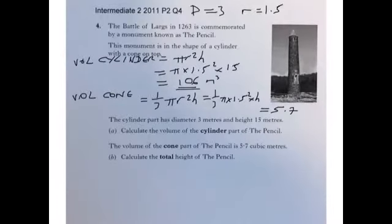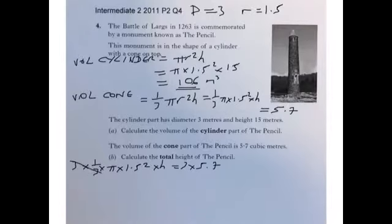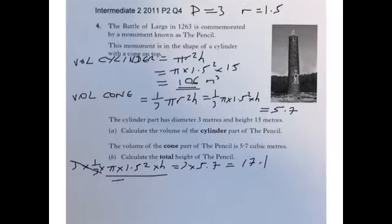What we need to do now is rearrange this equation to find out what the height of the cone is. To get rid of the third, we multiply both sides of the equation by 3. So 3 times one third pi times 1.5 squared times h equals 3 times 5.7. On the left hand side the 3 and the third will cancel. 3 times 5.7 equals 17.1. Now we want to leave h on its own, so we divide both sides by pi times 1.5 squared.